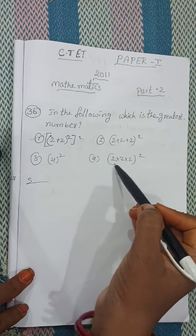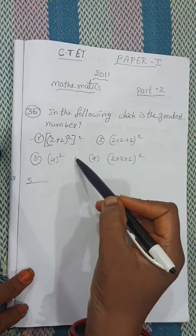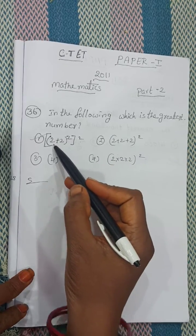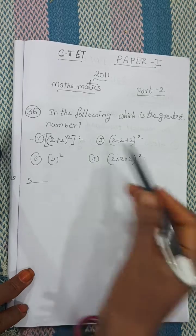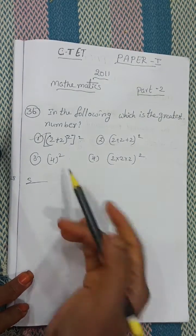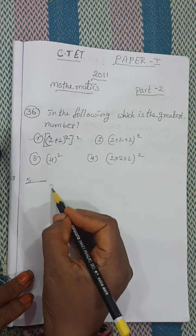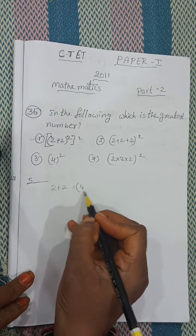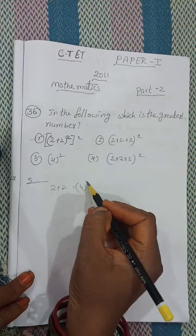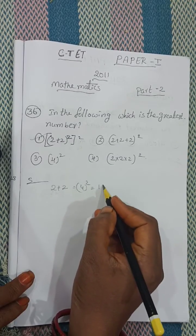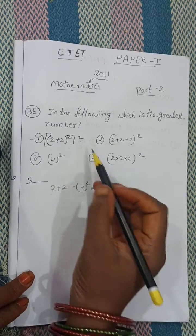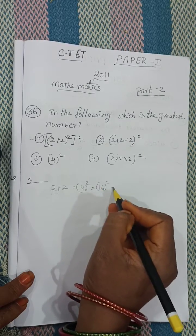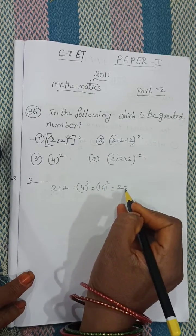Four numbers are given here. First one: 2 plus 2 equals 4, whole square — how much? 16. Again square — how much? 256.